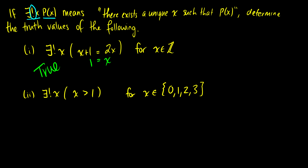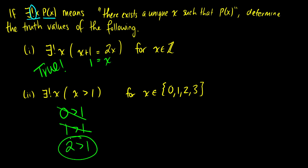What about the second one? There exists a unique x such that x is greater than 1, where x is chosen from {0, 1, 2, 3}. So: 0 > 1 is false; 1 > 1 is false; 2 > 1 is true — but wait, 3 > 1 is also true. So this statement is false because there is more than one x value greater than 1. x is not unique, therefore the truth value is false.